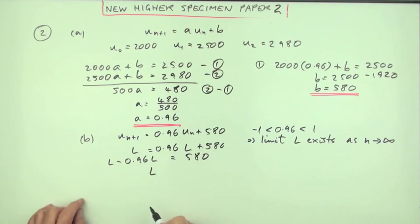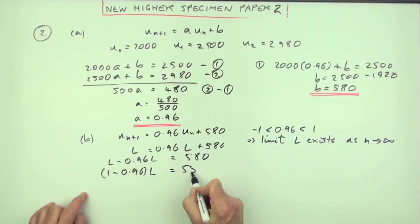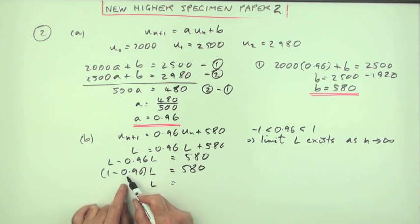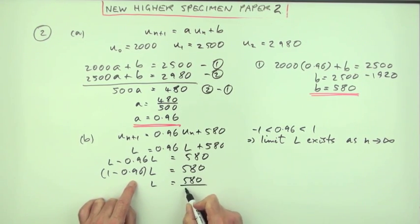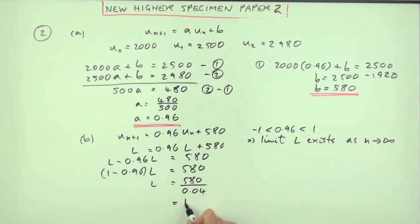That'd be 1 minus 0.96 is 580. And then divide by that, which is just 0.04. So 580 over 0.04. So that'd be 4 into 5 goes to the 1. Let's pay for tuition to be doing this. Remainder 1. 4 into 18 goes 4. Remainder 2, 5. Get the size correct, move that another two places. So 14,500.